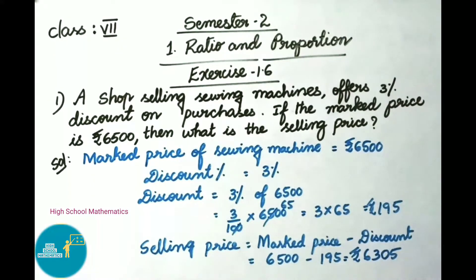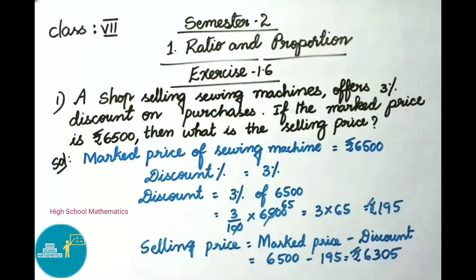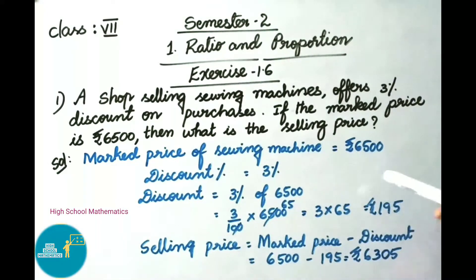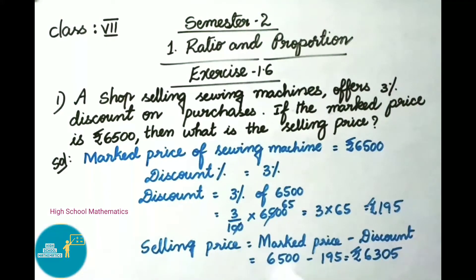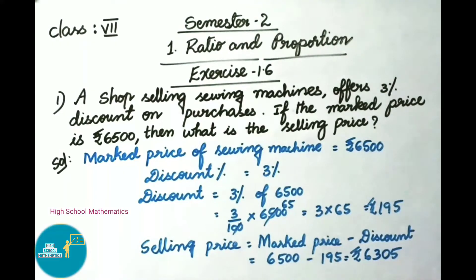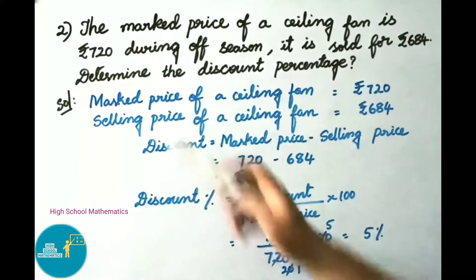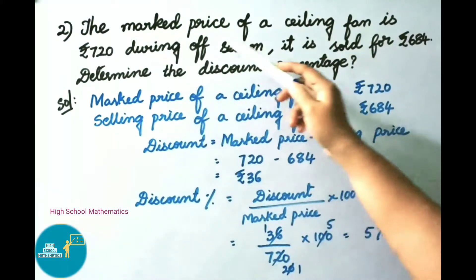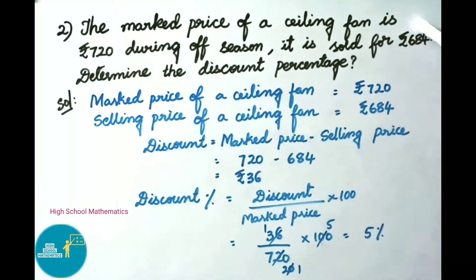Now let us find the selling price of sewing machine. Selling price equals market price minus discount, that is 6500 minus 195, which equals 6305 rupees. Therefore, selling price of sewing machine is 6305 rupees. Now question number two: the market price of a ceiling fan is 720 rupees; during off season it is sold for 684 rupees. Determine the discount percentage.